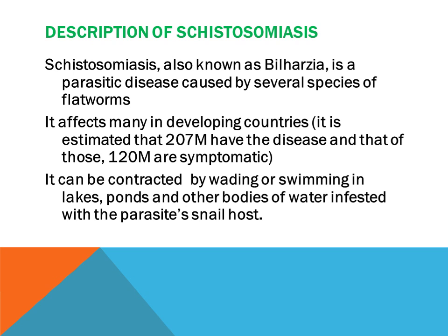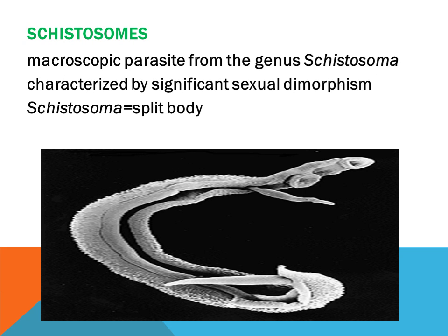Description of Schistosomiasis. Schistosomiasis, also known as bilharzia, is a parasitic disease caused by several species of blood worms. It affects many in developing countries. It is estimated that 207 million have the disease and that of those, 120 million are symptomatic. It can be contracted by wading or swimming in lakes, ponds and other bodies of water infested with a parasite snail host. Schistosomes are macroscopic parasites from the genus Schistosoma, characterized by significant sexual dimorphism. Schistosoma simply means split body, and this is a diagram showing the Schistosoma.